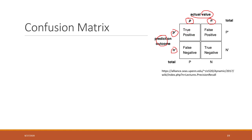In the confusion matrix, we have positives predicted as positive — that is correct, called true positive — and negatives predicted as negative — also correct, called true negative. In the cell where the actual value is negative but we predicted it as positive, that is a wrong answer called false positive. And where the actual value is positive but we predicted it as negative, that is also a wrong answer, called false negative.